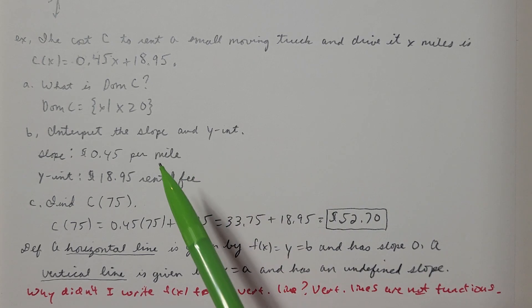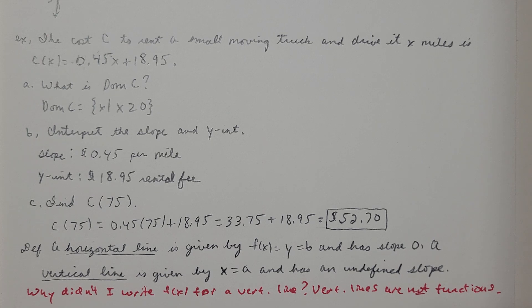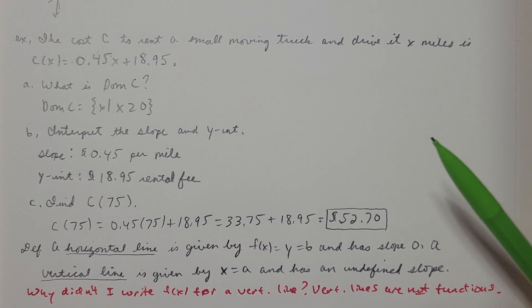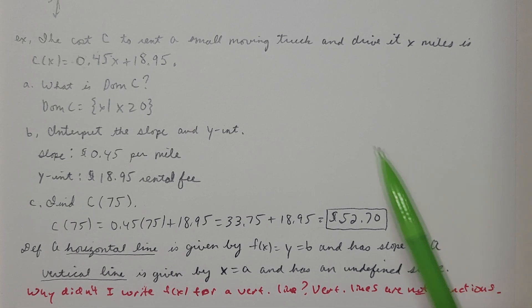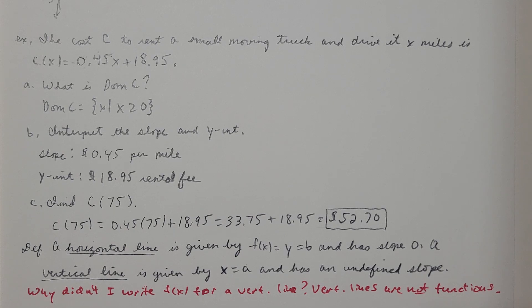It costs 45 cents per mile to drive the truck — that's what the slope means in this problem. It doesn't mean how you'd graph the line step by step; it means how the cost relates to mileage. The y-intercept of 18.95 means there is an $18.95 rental fee just to get the truck in the first place. Then once you have the truck, it costs 45 cents per mile.